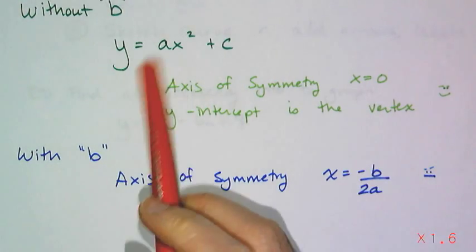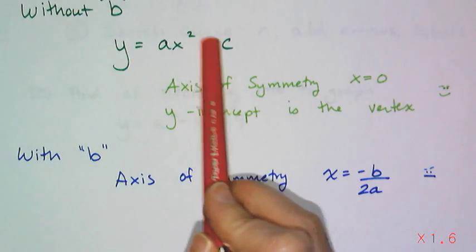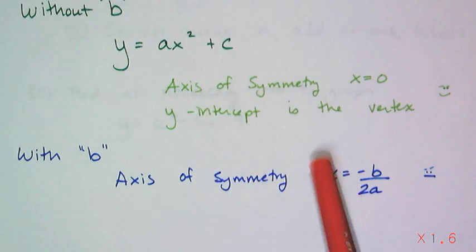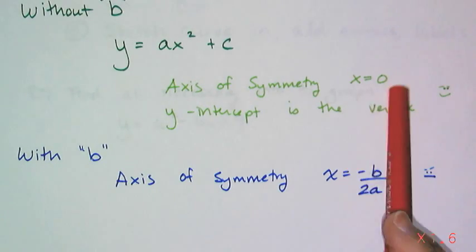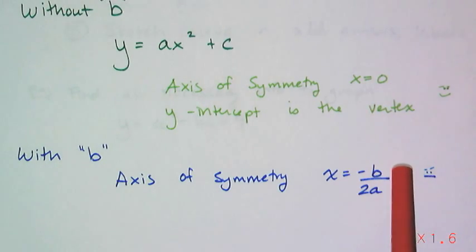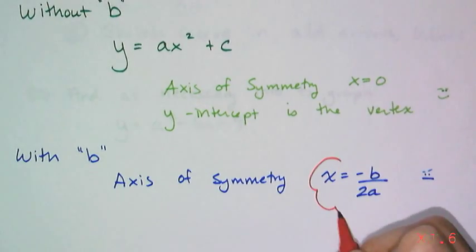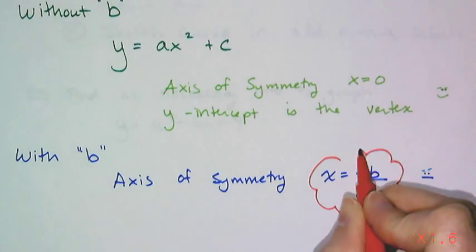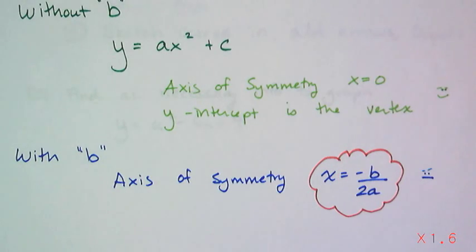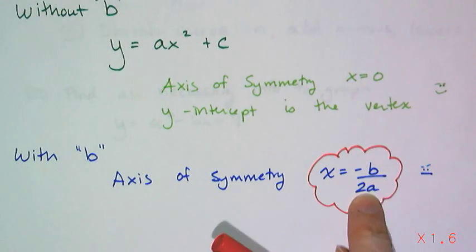Now if the b term is missing, in this case, it's really b is 0, so it's 0x. And so if I plug in the 0 here, I'm going to get x equals 0. So this is the formula for the axis of symmetry for a quadratic function. It's x equals the opposite of b over 2a.